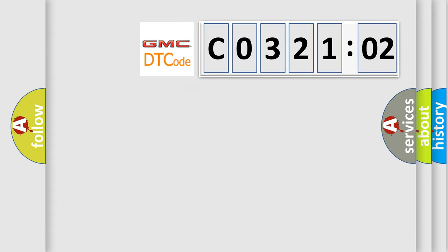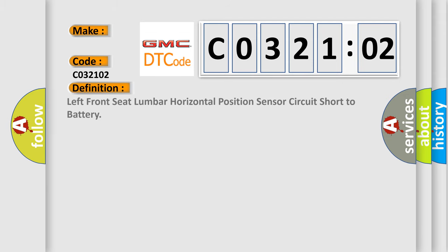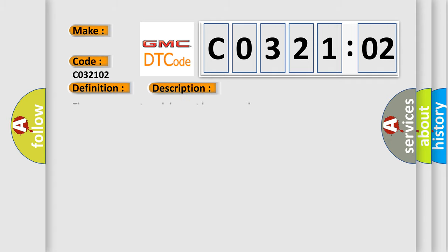So, what does the diagnostic trouble code CO32102 interpret specifically for GMC car manufacturers? The basic definition is left front seat lumbar horizontal position sensor circuit short to battery. And now this is a short description of this DTC code.